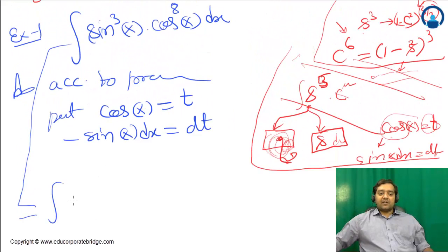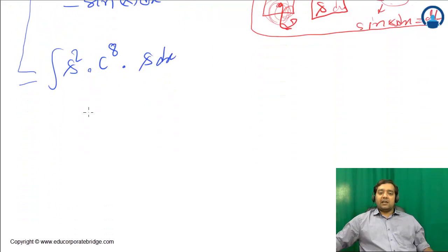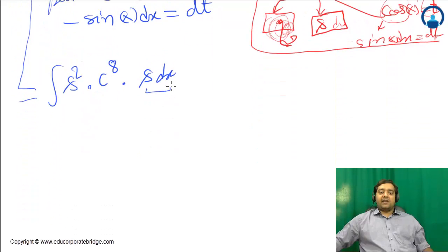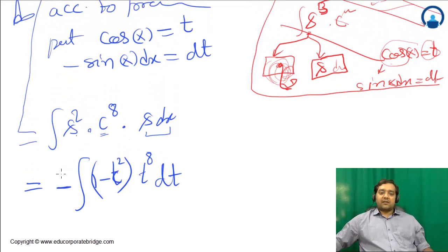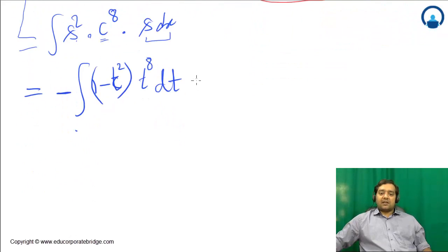That will give you -sin(x)dx = dt. So the integral becomes: sin³(x) = sin²(x) · cos⁸(x) · sin(x)dx. The integral is sin(x)dx which equals -dt, and sin²(x) = 1 - cos²(x).